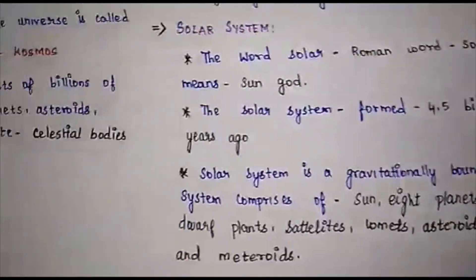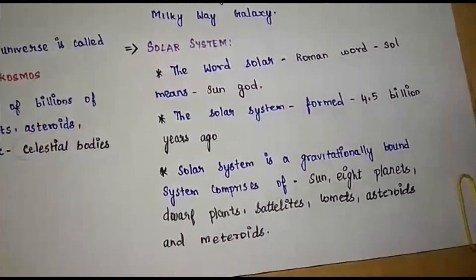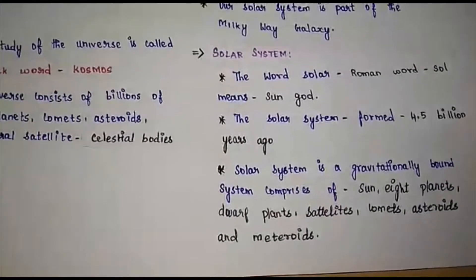Then sun, dwarf planets, satellites, comets, asteroids and meteoroids are all in the solar system.